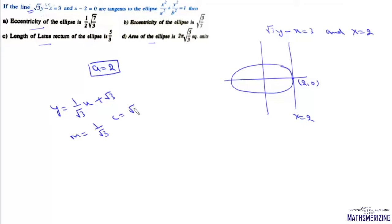Now the condition of tangency is c² = a²m² + b². Now c² is 3, a² is 4, and m² is 1/3, so it will be 4/3 + b². So from here we can write b² as 9 minus 4, so it will be simply 5/3.